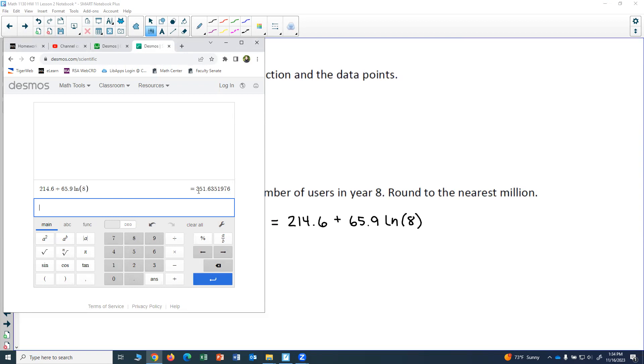It says round to the nearest million. And remember our y values are in millions already. So that means I'm rounding this number to the nearest whole number. So 352, because the number right after the decimal is a 6, so that would round the ones place up to a 2. So 352 million.